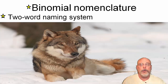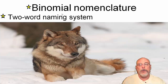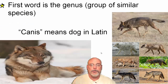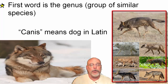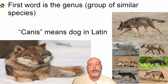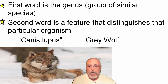Our next topic is binomial nomenclature. 'Bi' means two and 'nomen' means name, so this is a two-word naming system. The first word is the genus — a group of similar species. For example, the wolf, dog, and other dog-like animals share the genus Canis, which is where the word 'canine' comes from. The gray wolf is called Canis lupus — 'lupus' meaning gray — so this is the gray wolf.